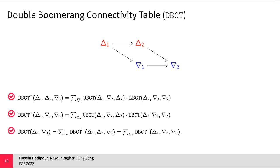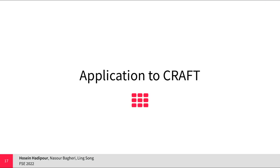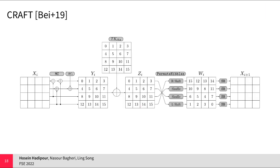Now we are ready to discuss the application of our method for CRAFT. CRAFT is a lightweight tweakable block cipher introduced at FSE 2019. The block size of CRAFT is 64 bits and the tweak size is 128 bits. The round function applies five basic operations on the internal state, including the diffusion layer and the nonlinear layer. The internal state can be viewed as a 4x4 array of nibbles. The nonlinear layer consists of applying the same 4-bit S-box on every single nibble, and the diffusion layer includes MixRows, tweak addition, round constant addition, and a permutation over the positions of nibbles.